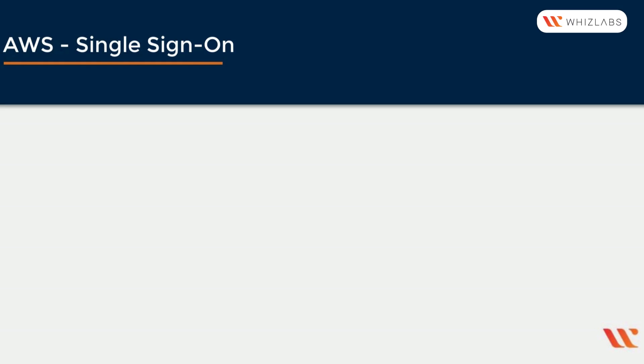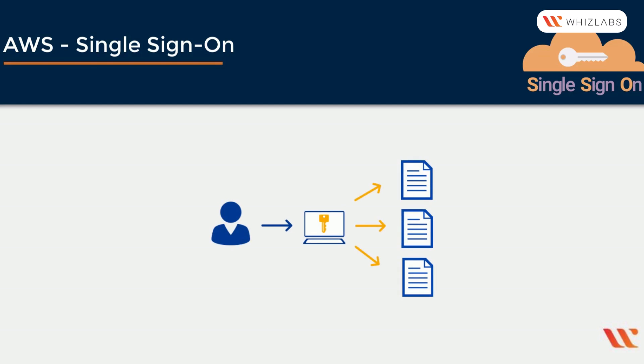Before we start talking about AWS SSO, let's chat a little bit about single sign-on. Single sign-on, or SSO in short, is the ability to centrally manage all your enterprise-wide identities like users and groups, and allow those identities to access an array of enterprise applications like Salesforce, Office 365, or even Dropbox.